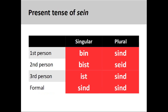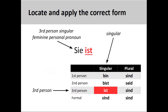Finally, the conjugation pattern for the strong verb sein, meaning 'to be,' is completely unpredictable and must be committed to memory. The sentence sie ist, meaning 'she is,' shows the correct third person conjugation.